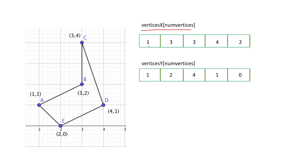For example, vertices_x will store all x values such as 1, 3, 3, 4, 2 and vertices_y will store all y values such as 1, 2, 4, 1, 0 for all vertices of the polygon. Now let's move to the coding part.